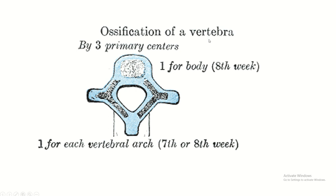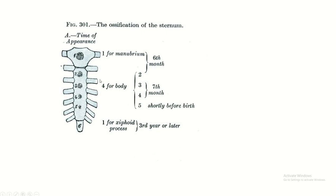Ossification centers of the vertebra: one for body, and one for each arch. Ossification centers of the sternum: one for manubrium, four for body, and one for each xiphoid process.